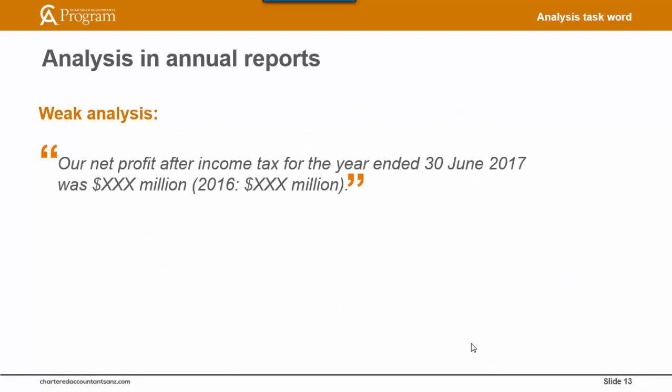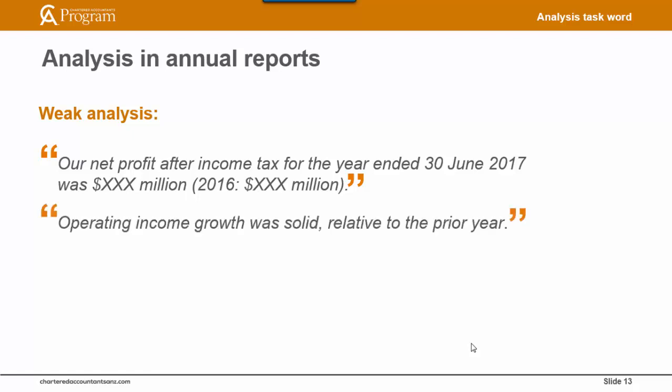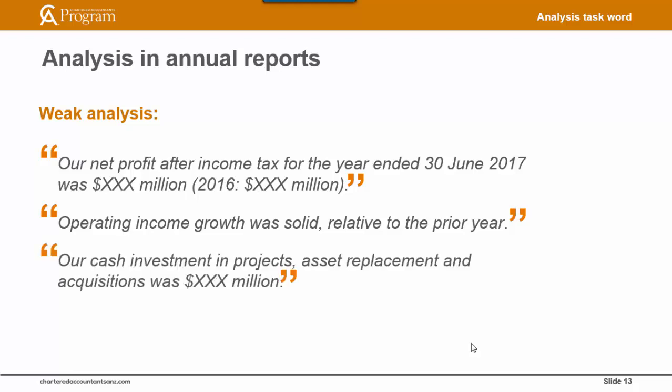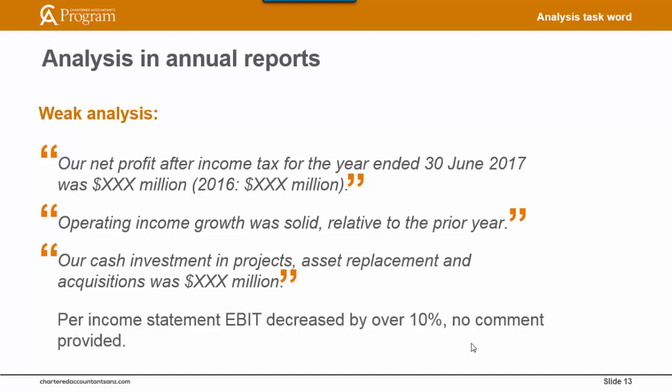We would also expect to see analysis in annual reports. This is an extract from the commentary section of the financial results of a recent annual report of a listed company. There was no accompanying comment linking the profit to the organization's strategy, operations or industry conditions. Similarly, another point from a different annual report would not be considered analysis as it is effectively restating what is already reflected in the income statement. Another point states that cash investment in projects, asset replacement and acquisition was a certain figure — again restating available information with no linkage made to the purpose of the investment or how it links to the business strategy. And finally, in another example, EBIT decreased by over 10% and no reasons were provided in the commentary. Effective analysis would have outlined the main causes of this decrease.